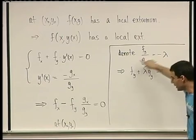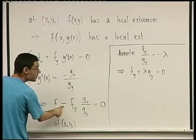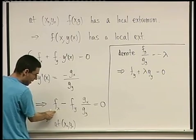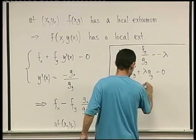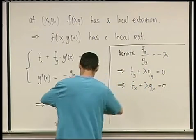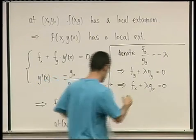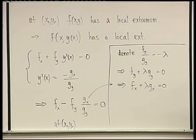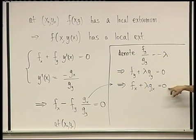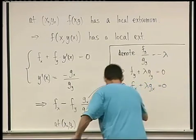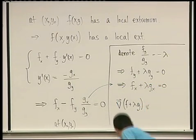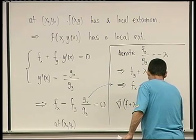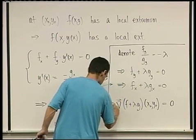Taking this and plugging into the earlier equation: fx minus fy/gy (which is minus lambda) gives fx + lambda·gx = 0 as well. So this lambda precisely satisfies that at the point (x₀, y₀), the gradient of f plus lambda times the gradient of g equals zero. That's what we wanted to prove.